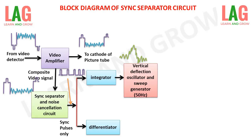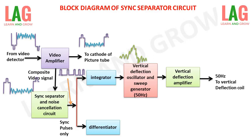The high-frequency triangular wave is applied to the vertical deflection oscillator and sweep generator, which operates at a frequency range of 50 Hz. The operation of this vertical deflection oscillator and sweep generator is to generate the vertical signal pulse at a frequency of 50 Hz for scanning the picture signal from top to bottom and vice versa on the screen.